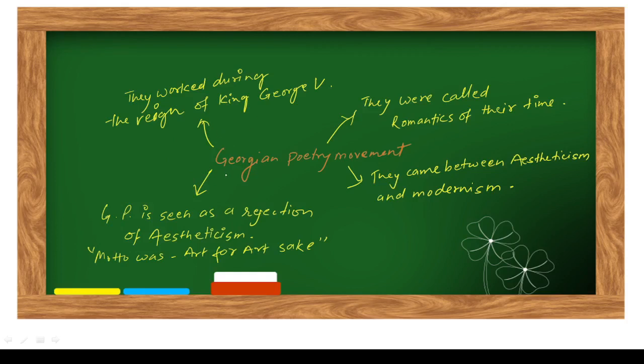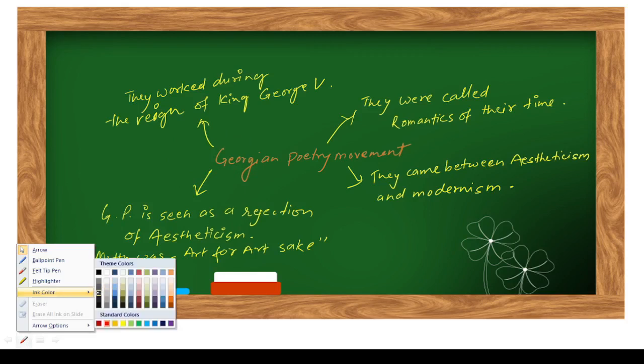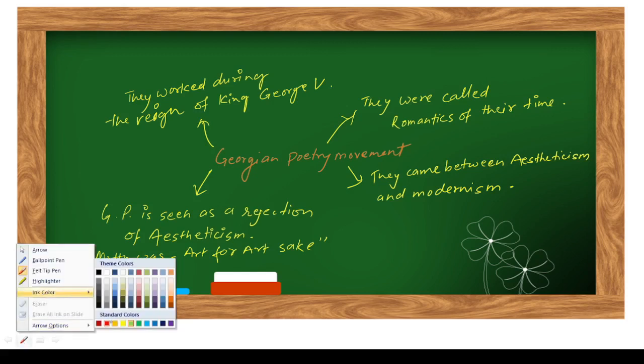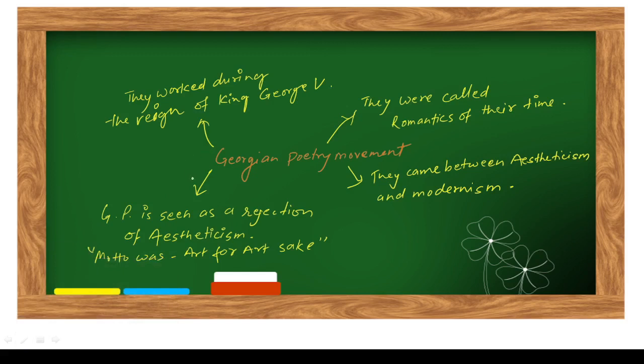Hello everyone, welcome to Best Notes Tutorial. Today we are going to talk about Georgian poetry movement. So let's start. Georgian poetry movement - they worked during the reign of King George V. First thing you must know is that it was King George V whose reign was at that point of time.